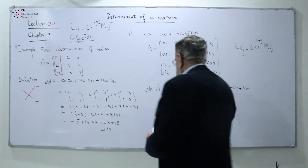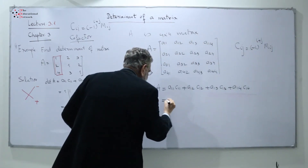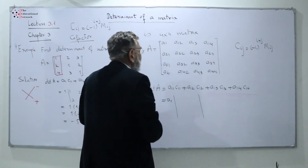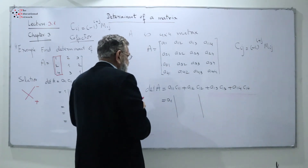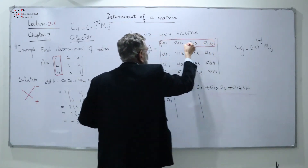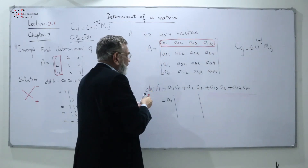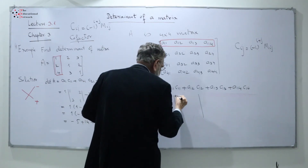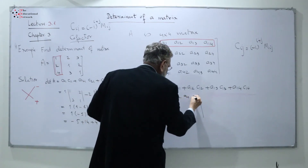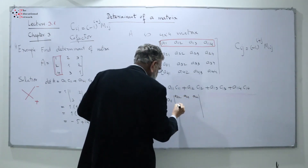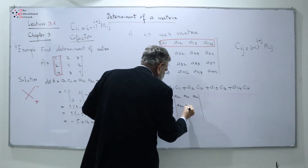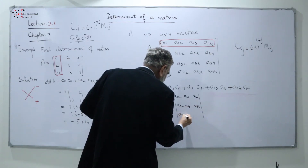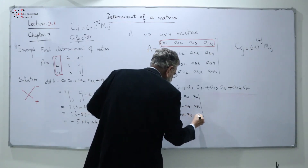For the cofactor C11, we take A11 and block the first row and first column entirely. What remains is the 3x3 minor with entries A22, A23, A24; A32, A33, A34; A42, A43, A44.